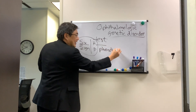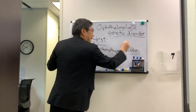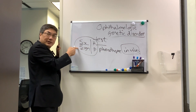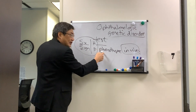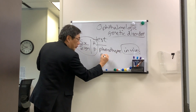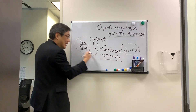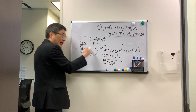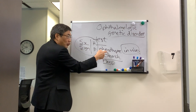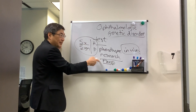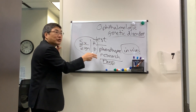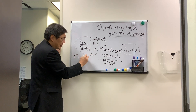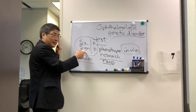We want to first do an in vivo phenotypic classification of whatever the patient said and whatever we saw on the patient's examination. Based on the phenotype, we look in the literature and see if other people with this phenotype — especially if they have a family history of the same phenotype — look like this person and his family members. That requires you to know something, or at least look it up. Then you have candidate genes you can choose from based on this phenotypic presentation.